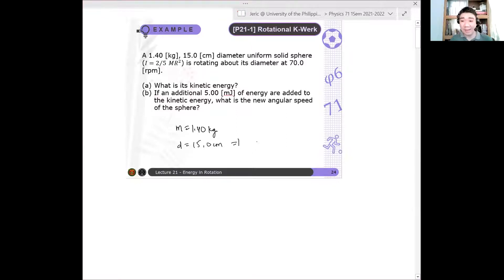Implying that the radius—be careful here, diameter is given, so you need to convert to radius. For example, on an exam, the choices might include the answer if you used diameter. You might think it's correct, but actually your answer is wrong. This happens. 7.50 cm will be the radius.